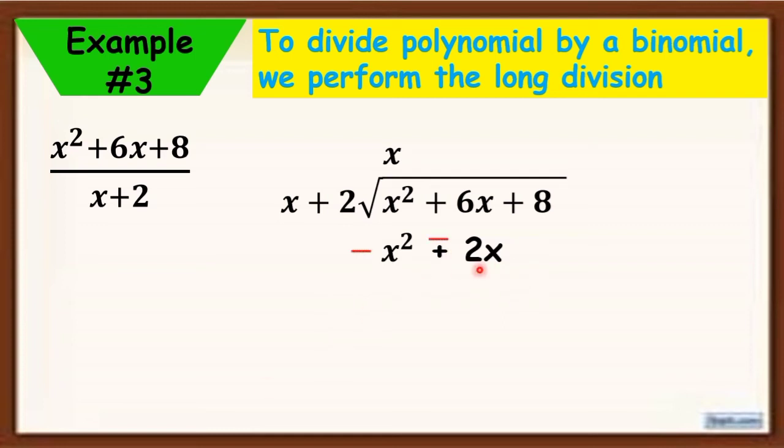Don't forget to change the sign. So x squared will become 0, because x squared minus x squared is 0. Then, 6x minus 2x equals 4x. We subtract because they are unlike signs. Now, bring down 8.